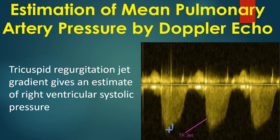Tricuspid regurgitation jet gradient gives an estimate of right ventricular systolic pressure. Using the simplified Bernoulli equation from the measured tricuspid regurgitation jet velocity, the right atrial pressure added to the peak TR gradient gives the right ventricular systolic pressure. This will be equal to the pulmonary artery systolic pressure in the absence of right ventricular outflow tract obstruction.